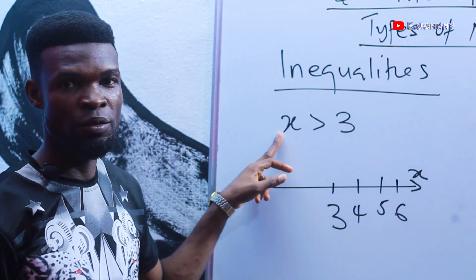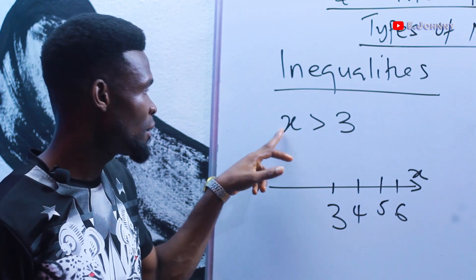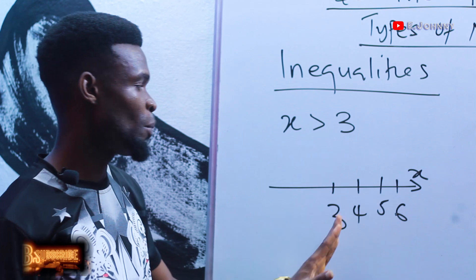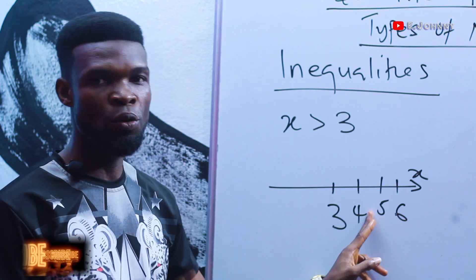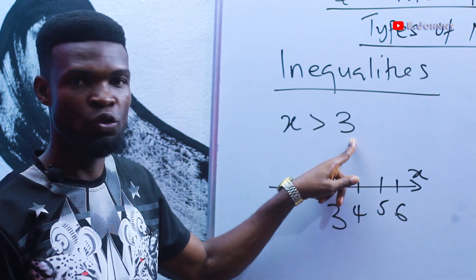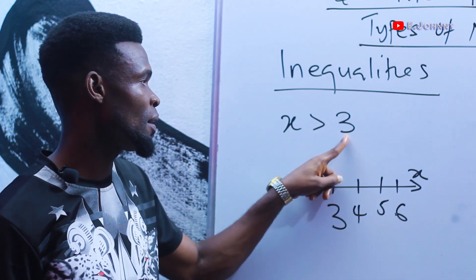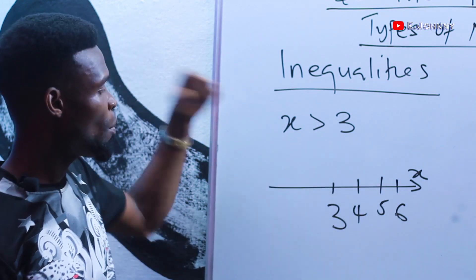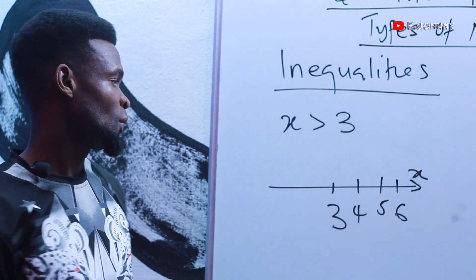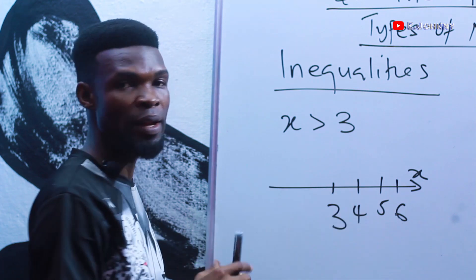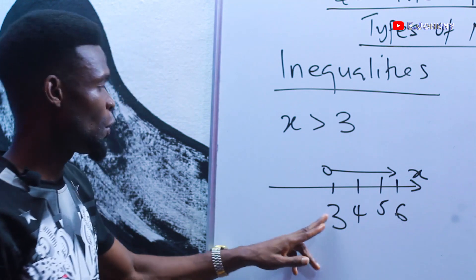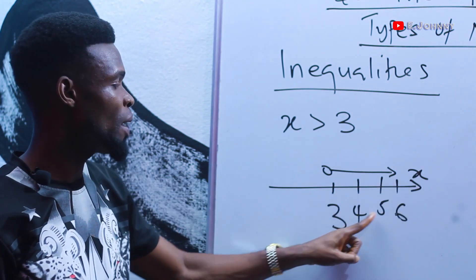You cannot pick three and substitute it for x, because three is greater than three is not true. Since we're dealing with whole numbers, the first number we pick is four. Four is greater than three, five is greater than three, six is greater than three — so numbers from four to infinity satisfy this inequality. On the number line, we draw an arrow going to the right from three.